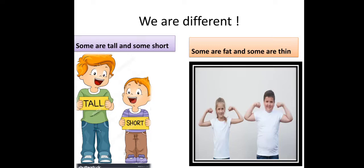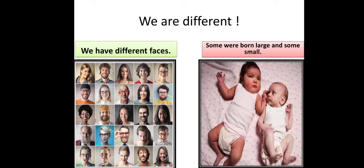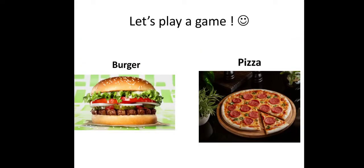We human beings are different because some can be tall, some can be short — not everybody would be the same height. Some can be fat, some can be thin. We all have different faces. If you look at yourself in the mirror, you look different from your sister. And some babies can be born large in size while others can be born small in size.